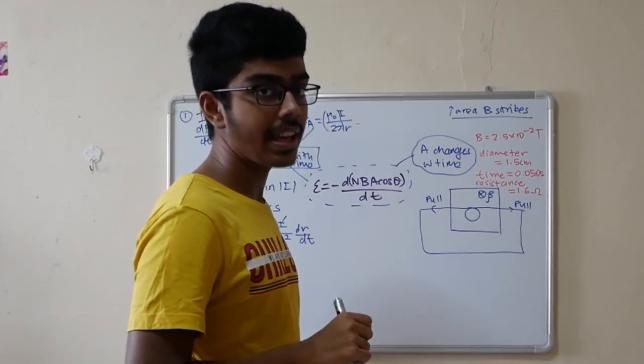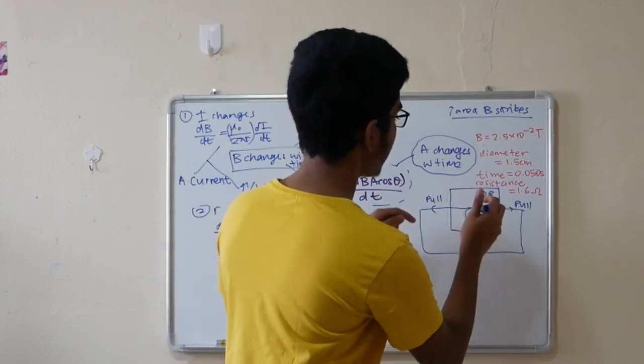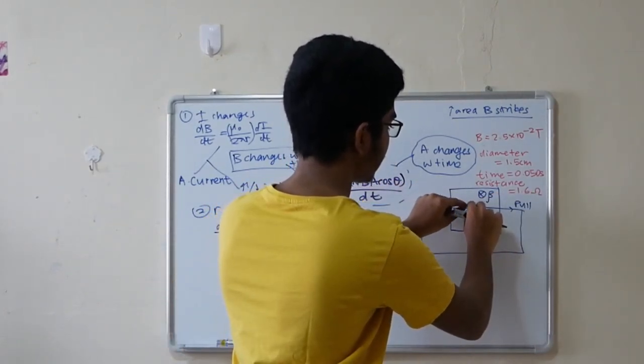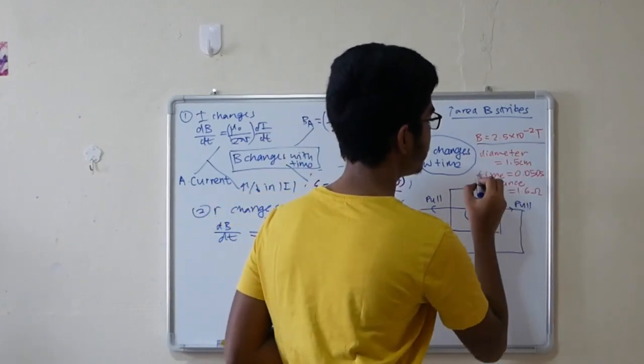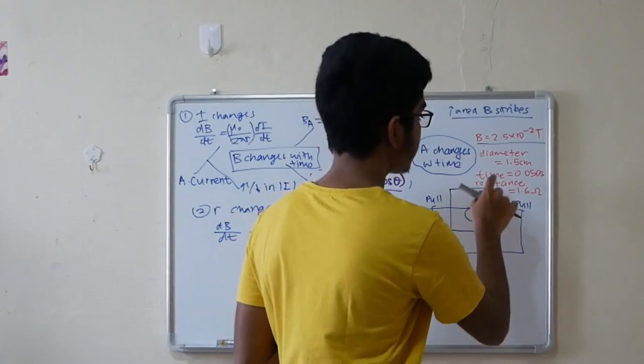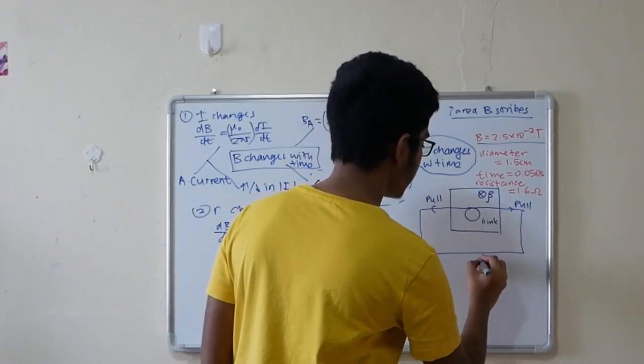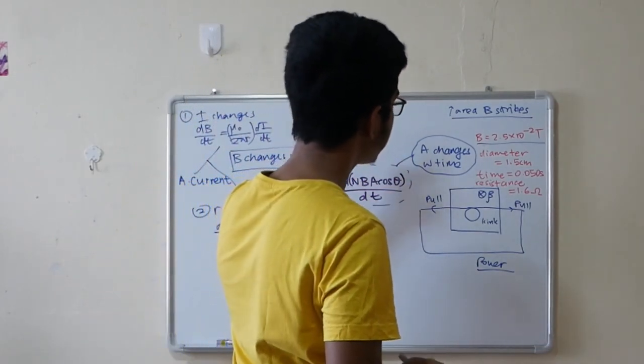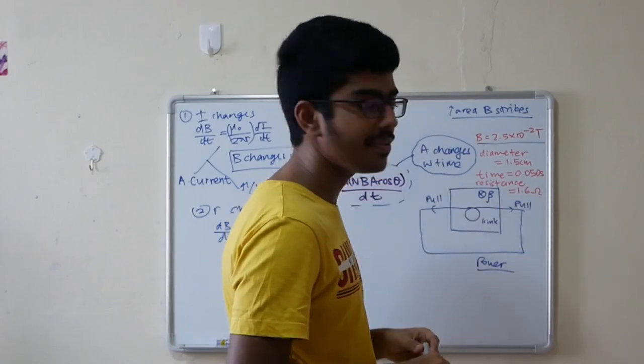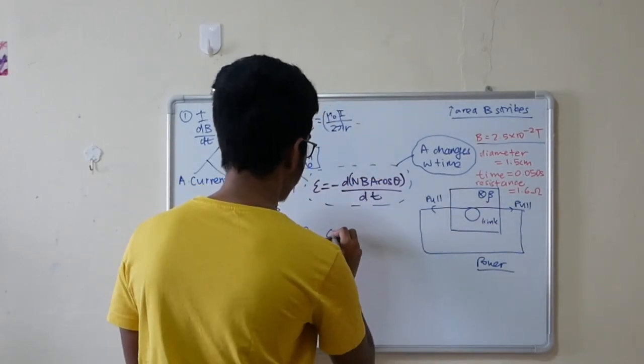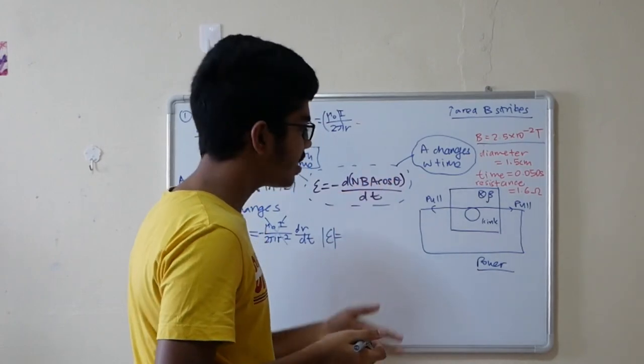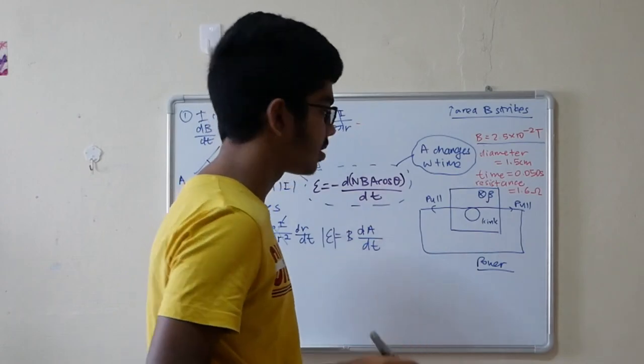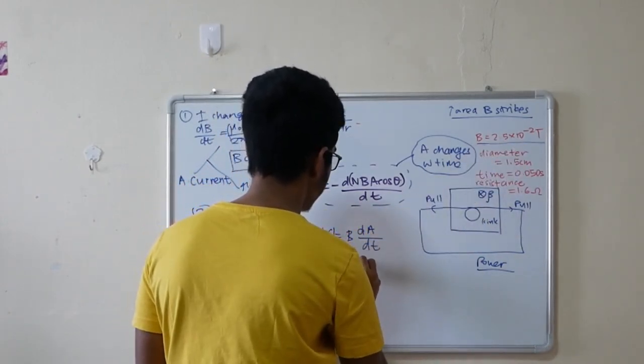Here is a question from 2010 SAJC prelims. You have a kink right here, it's just a small coil of wire, and that person pulls so the kink becomes smaller and then it vanishes. These are the values of B, the diameter of the kink, the time to straighten, and the resistance. The question is, what is the power that is generated? First, identify what is changing. Area is changing. The area of the coil that's illuminated by the B field is changing. So if you modify this equation, n doesn't exist because this is one turn. Cosine theta is perpendicular. So it reduces to B dA over dt.